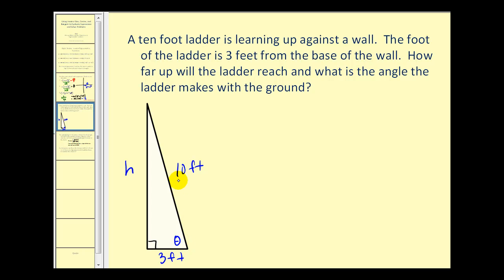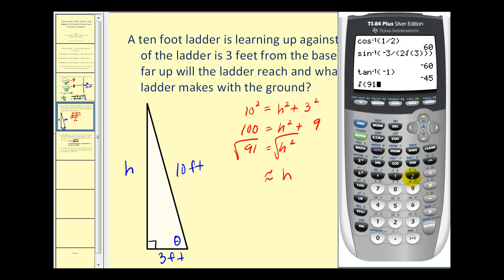Well, we can use the Pythagorean theorem to find h, where 10² must equal h² plus 3². So we'll subtract 9 on both sides, and then take the square root of both sides. The square root of 91 is approximately 9.54 feet.